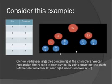Now we have a large tree containing all the characters. We can now assign a binary code to each symbol by going down the tree. Each left branch receives a zero and each right branch is a binary one.